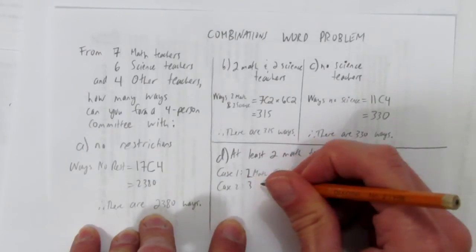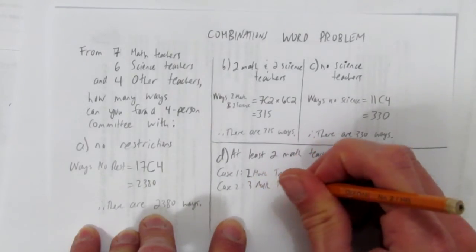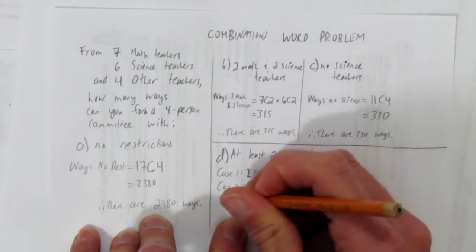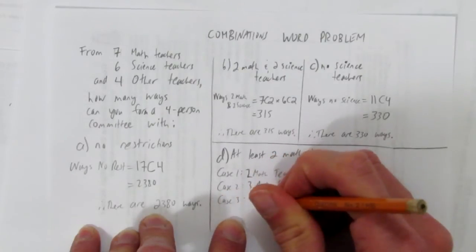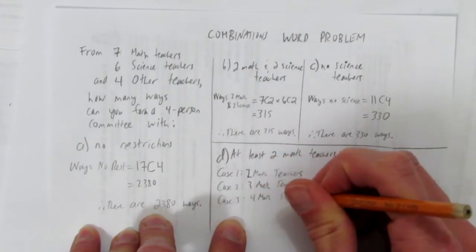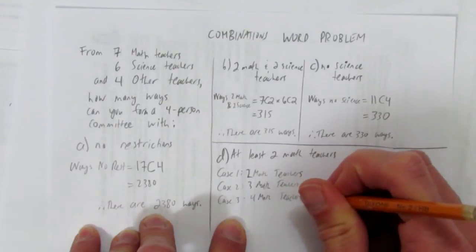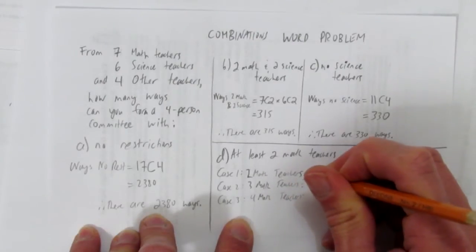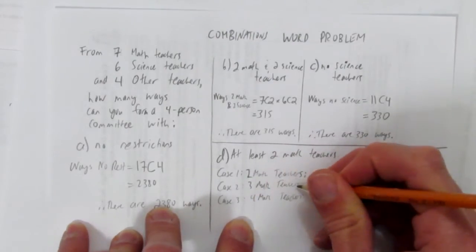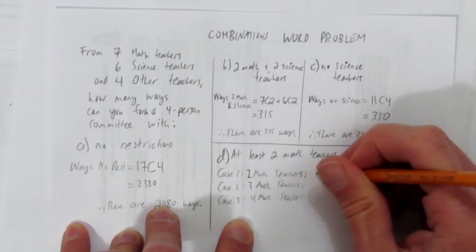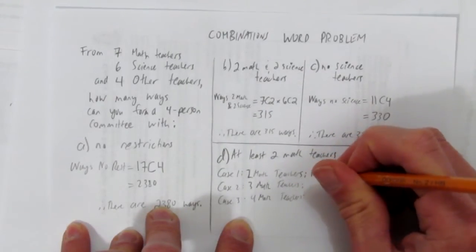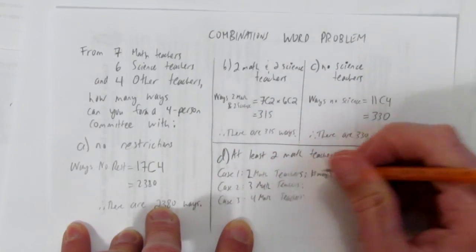Case one: two math teachers. Case two: three math teachers. And case three: four math teachers. I can label them all the same and just call it the number of ways, as long as it's clear.